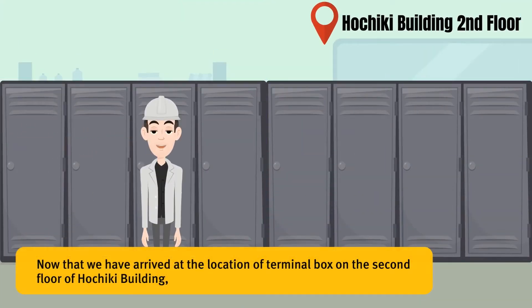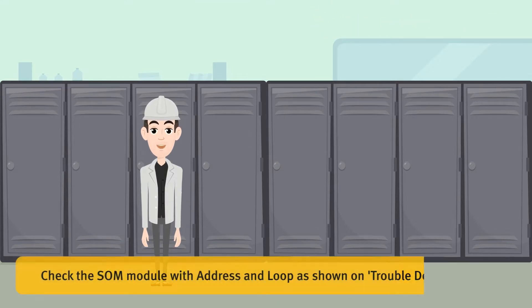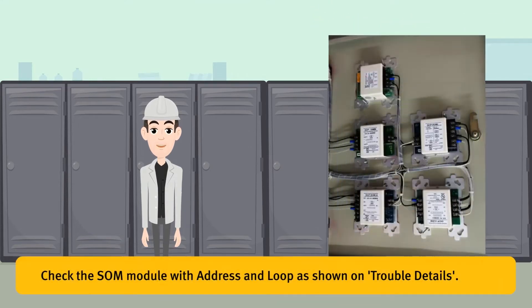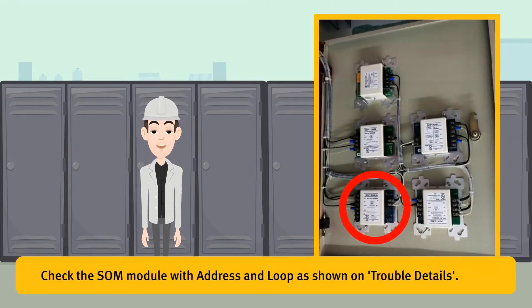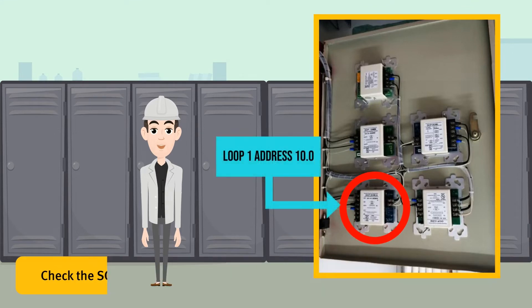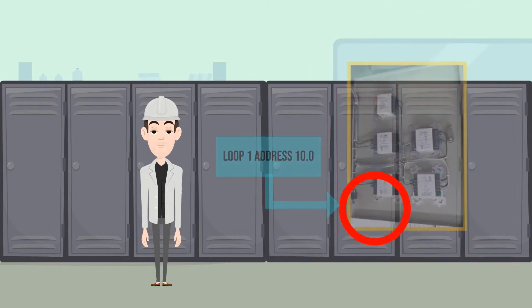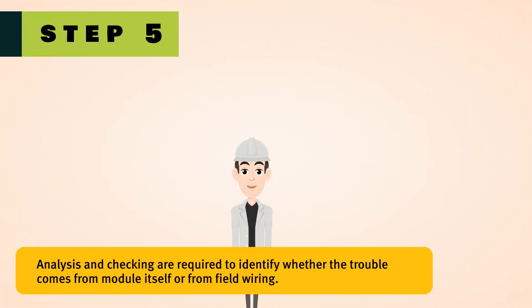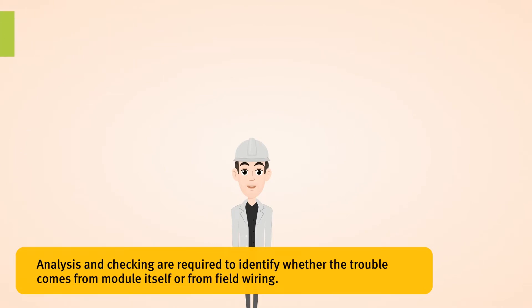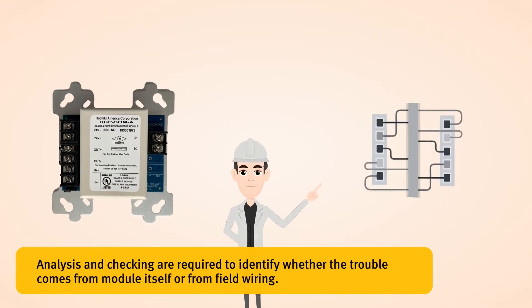Now that we have arrived at the location of the terminal box on the second floor of Hochiki building, check the SOM module with the address and loop as shown on the Trouble Details. Analysis and checking are required to identify whether the trouble comes from the module itself or from field wiring.